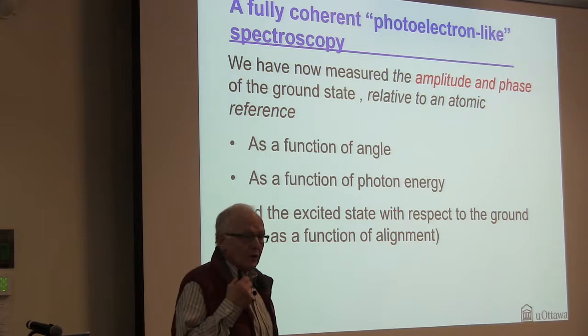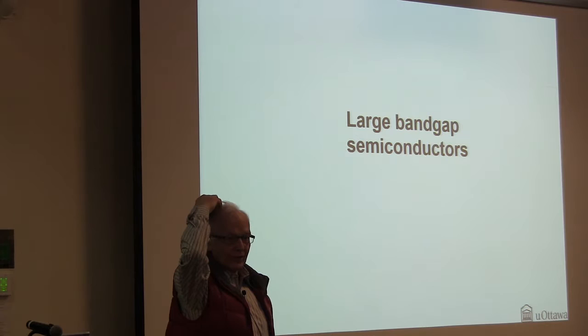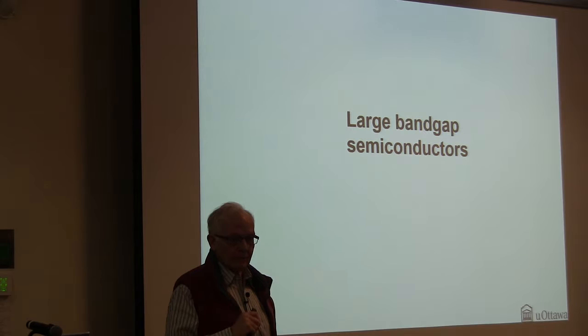We've taken it to a triatomic molecule, NO2, and looked at a molecule going through a conical intersection. But then that's more chemistry oriented and I think it's not appropriate. Do you want me to go on? Or do you want me to stop?